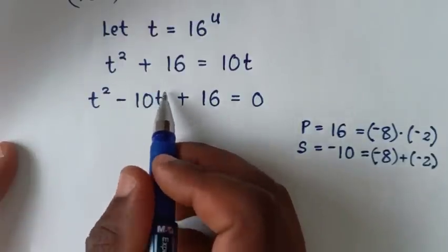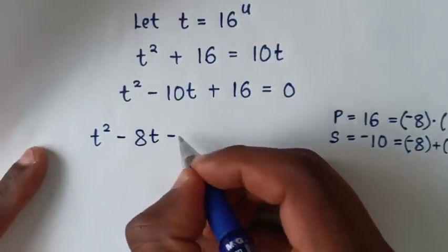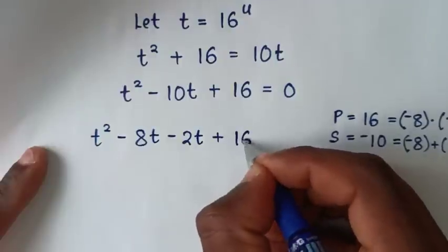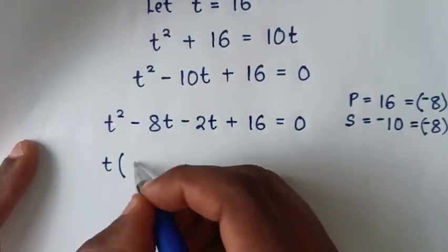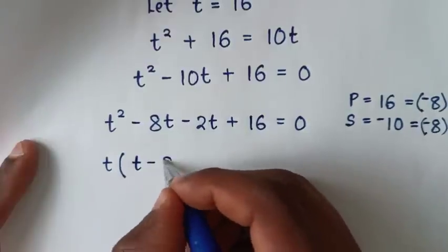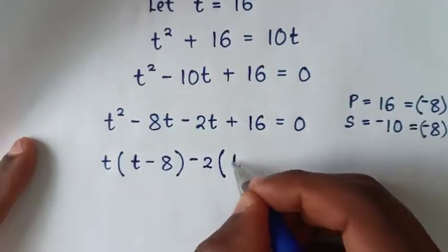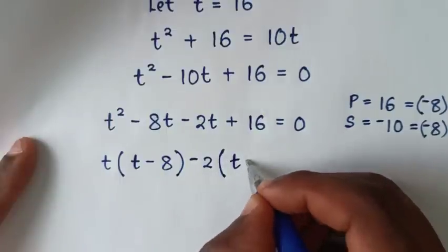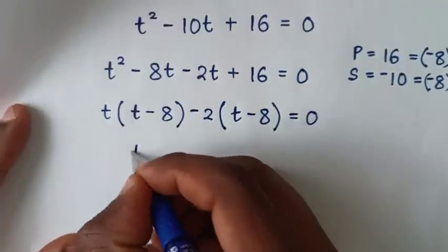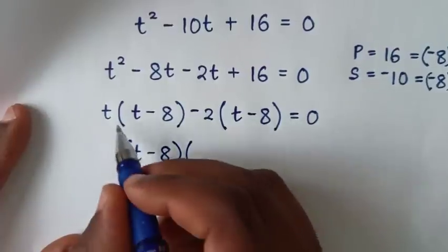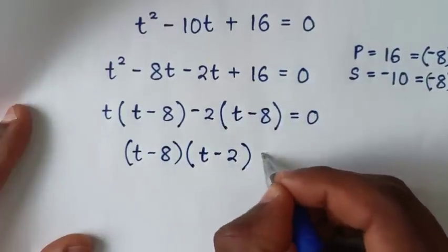We'll split this negative 10t. From the quadratic equation, it will be t squared minus 8t minus 2t plus 16 equals 0. From here, t is common, so we take t out of the bracket: t(t minus 8). Then we take negative 2 out of the next bracket: negative 2(t minus 8), equals 0. From here, t minus 8 is common, so we take t minus 8 out: (t minus 8)(t minus 2) equals 0.